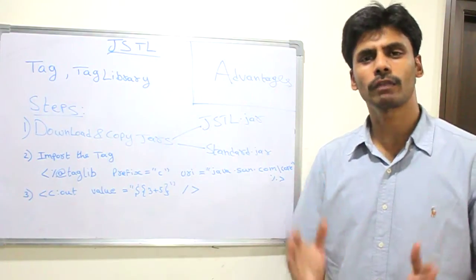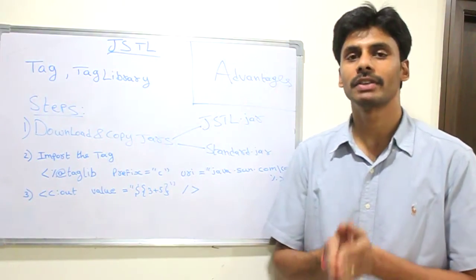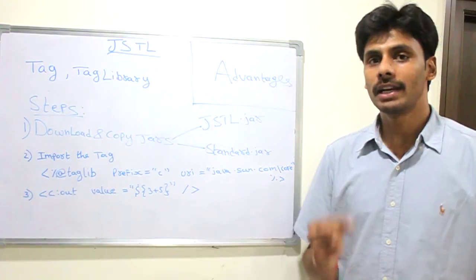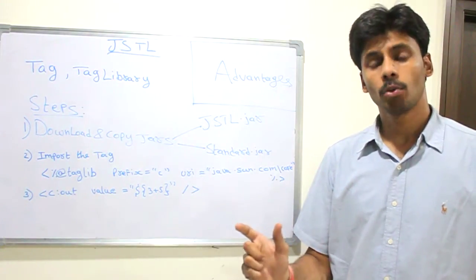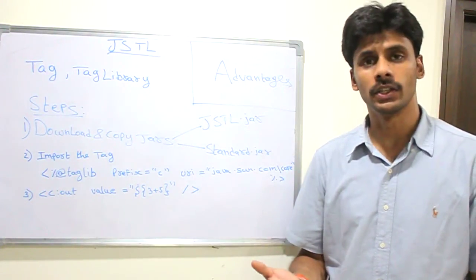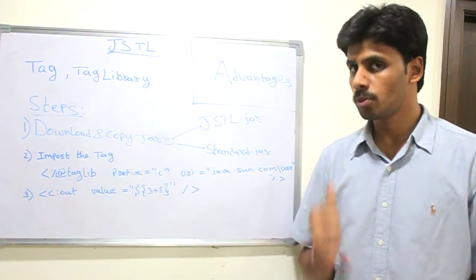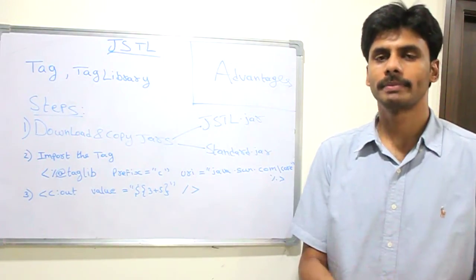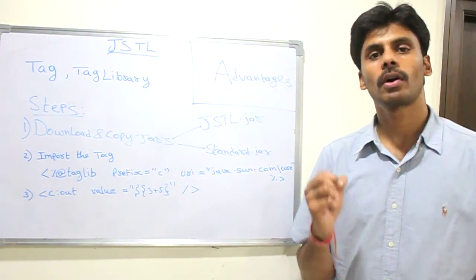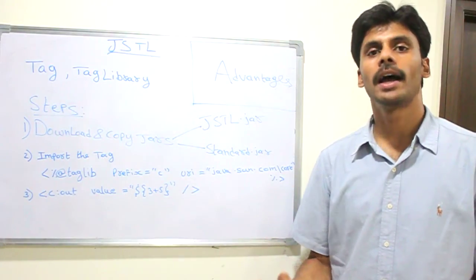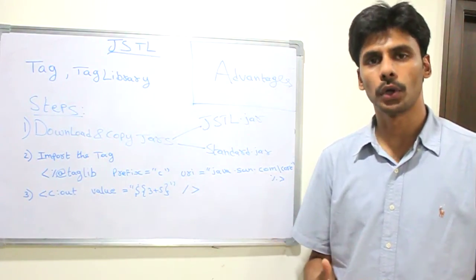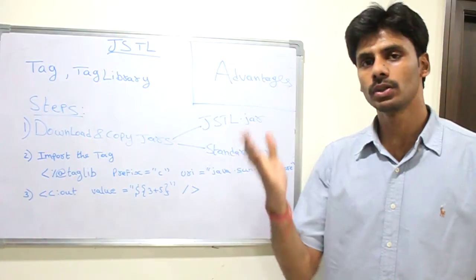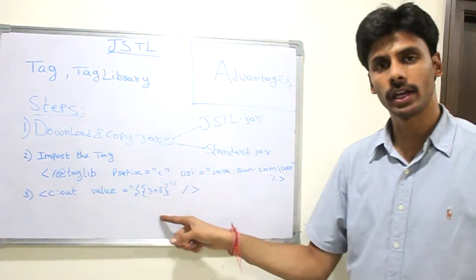Instead of writing or dumping a lot of Java code in your JSP page in your web application, it will use an XML element which has a Java class behind the scenes. It is the responsibility of your web container — like Apache Tomcat, WebSphere, or WebLogic — to call the appropriate Java class and give the output to you. But your JSP page will be very simple; it will use a few tags like what I have here.